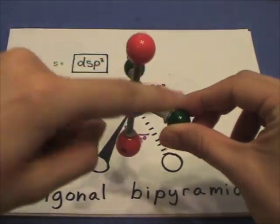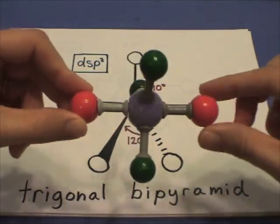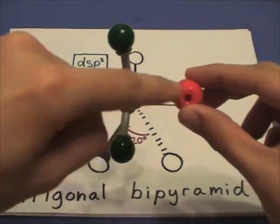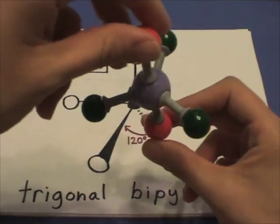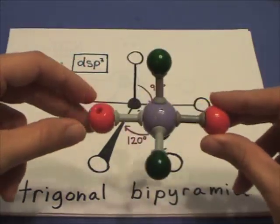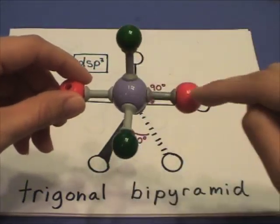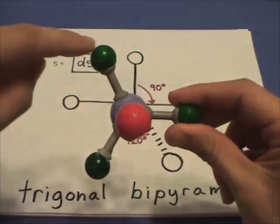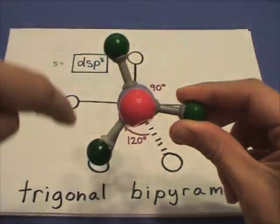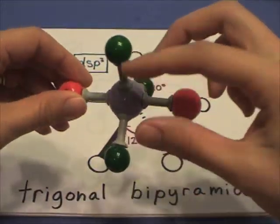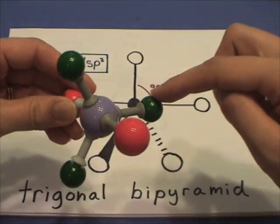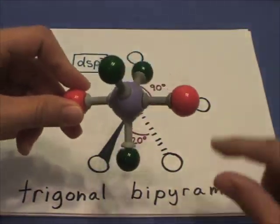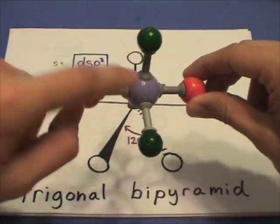dsp3 — trigonal bipyramid. The axial atoms are colored red and the equatorial atoms are green. They are not the same. Notice there is a 90 degree bond angle between an axial and an equatorial atom, and 120 degrees between the equatorial bonds. So green to green is 120 degrees, red to green is 90 degrees — two different bond angles in a trigonal bipyramid dsp3 hybridized central atom.